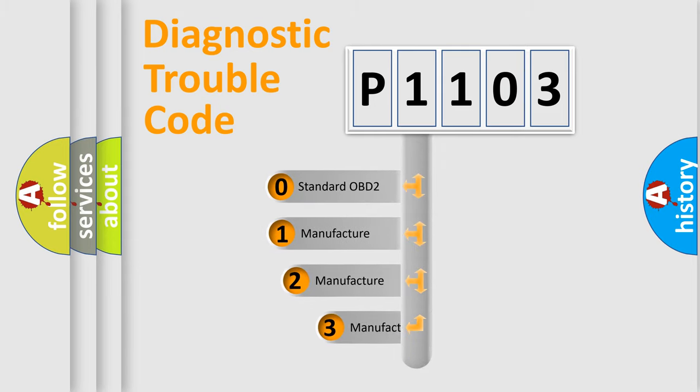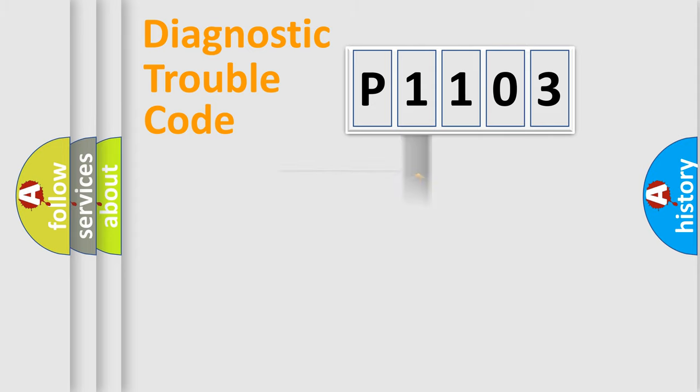If the second character is zero, it is a standardized error. In the case of numbers 1, 2, or 3, it is a manufacturer-specific expression of the car-specific error.